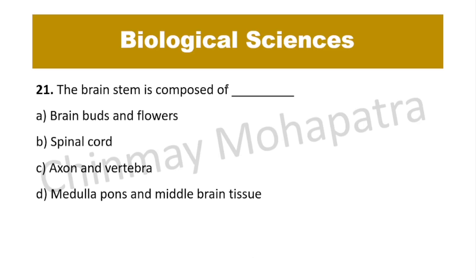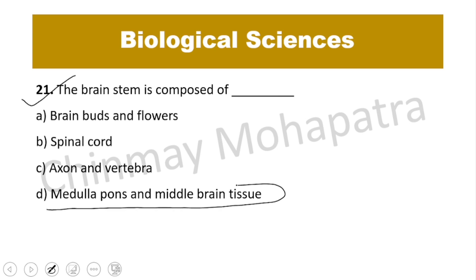Question number 21: The brain stem is composed of — the right answer is medulla, pons, and midbrain. That is medulla oblongata, pons, and midbrain tissue.